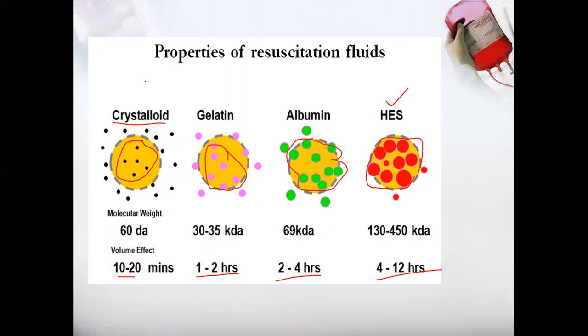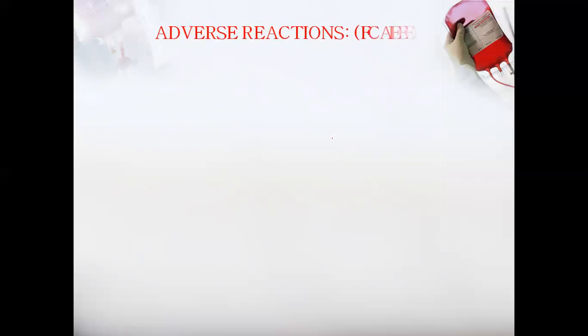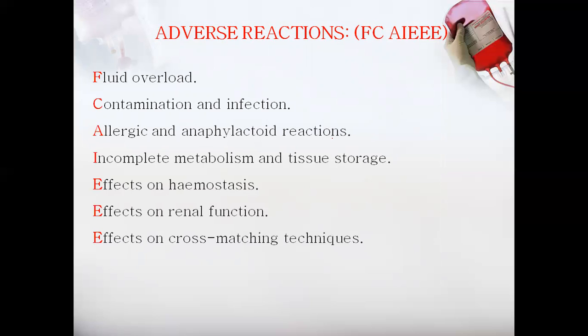After administration, adverse reactions can be remembered using the mnemonic FC AI triple E: F for fluid overload, C for contamination and infection, A for allergic and anaphylactic reactions, I for incomplete metabolism and tissue storage, first E for effects on hemostasis, second E for effects on renal function, and third E for effects on cross-matching techniques.